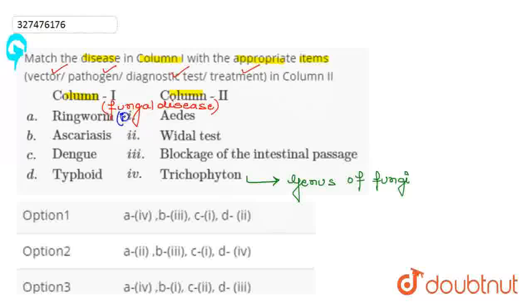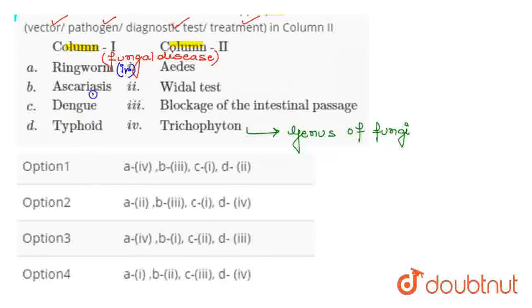After that, we have given here ascariasis. Ascariasis, which is our disease, which causes intestinal blockage. Next, dengue - the main factor is the Aedes mosquito, which transmits this virus. We will match this with the first.